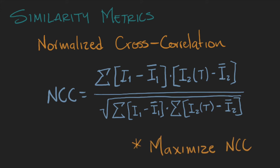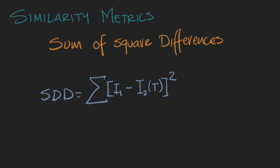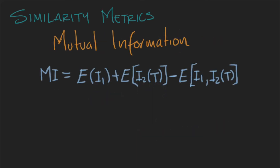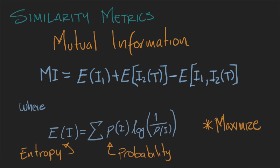The goal is to find the transformation that maximizes the NCC. Another metric is the sum of squared differences. In this case, we subtract the second image from the first one, we square the difference, and we sum the result. Here we try to find the transformation that minimizes the SSD. Another common metric is the mutual information. This is computed by adding the entropy of image 1 plus the entropy of image 2 after the transformation, minus the joint entropy of the two images. The entropy is calculated with the Shannon entropy formula, and we can try to maximize the MI value.